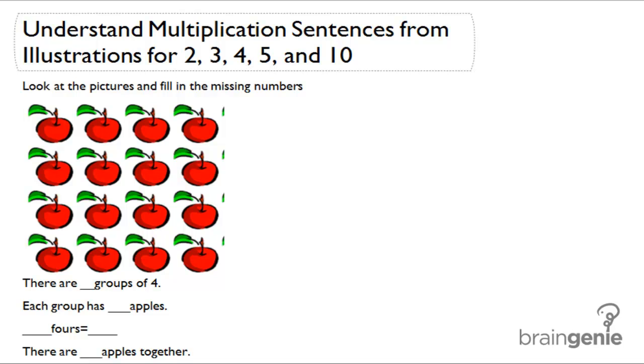Hi everyone. Today we're going to learn how to understand multiplication sentences from illustrations for the numbers 2, 3, 4, 5, and 10. Let's take a look at the example I have down here. Look at the pictures and fill in the missing numbers. So here are the multiplication sentences that we're going to have to fill in. So there are how many groups of 4?